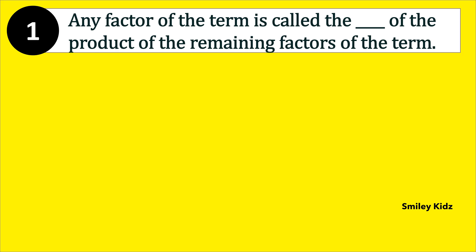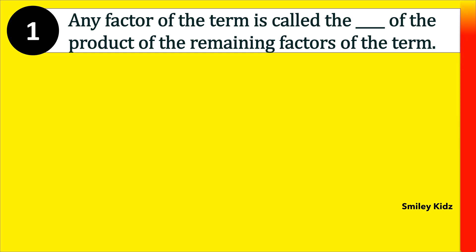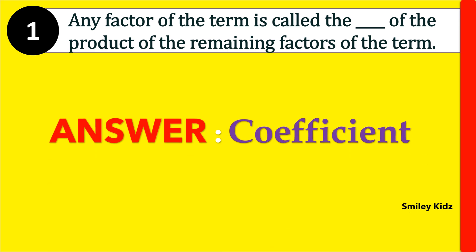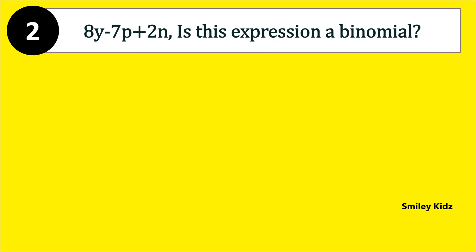Moving to question number 1. Any factor of the term is called the dash of the product of the remaining factors of the term. The right answer is coefficient. Any factor of the term is called the coefficient of the product of the remaining factors of the term.